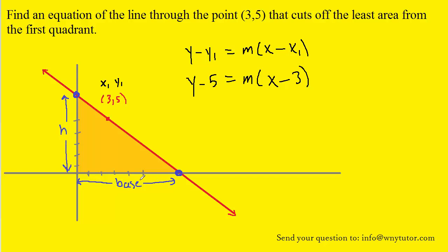We don't know the actual length of the base nor the length of the height, so we can use variables to represent them. This horizontal distance is most appropriately labeled x since it's along the x-axis, and this vertical distance is appropriately labeled y since it's along the y-axis. The x-intercept can be labeled (x, 0) and the y-intercept can be labeled (0, y).